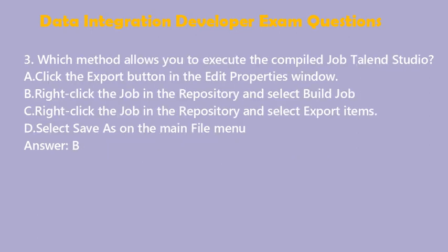Question 3: Which method allows you to execute the compiled job in Talend Studio? A. Click the Export button in the Edit Properties window. B. Right-click the job in the Repository and select Build Job. C. Right-click the job in the Repository and select Export Items. D. Select Save As on the Main File menu. Answer: B.